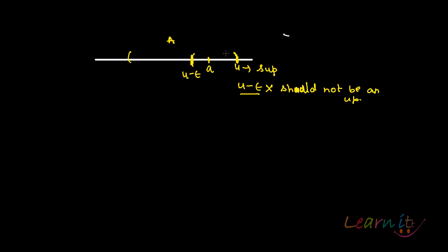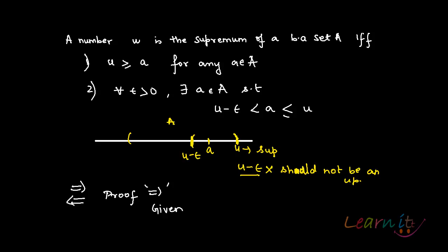Let's try to prove it. It's a theorem and an if and only if statement, so it has two parts: the only if part and the if part. We will first try to prove the only if part, which is P implies Q. So we will assume the premise and try to prove the consequence.